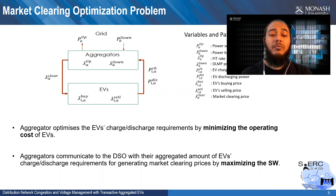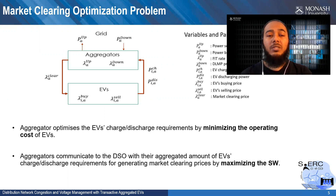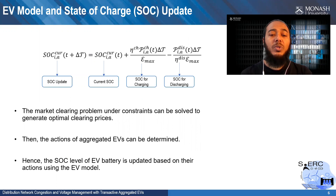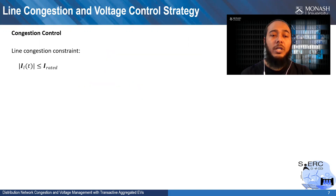The system performs in two levels. First, the aggregator optimizes electric vehicle charge and discharge requirements by minimizing their operating costs. Second, the aggregator communicates with the distribution system operator with their aggregated amount of EV charge and discharge requirements for generating optimal clearing prices by maximizing social welfare. Based on the optimal clearing prices, the actions of the aggregated EVs are determined, and then the state of charge of the electric vehicle is updated using this model.